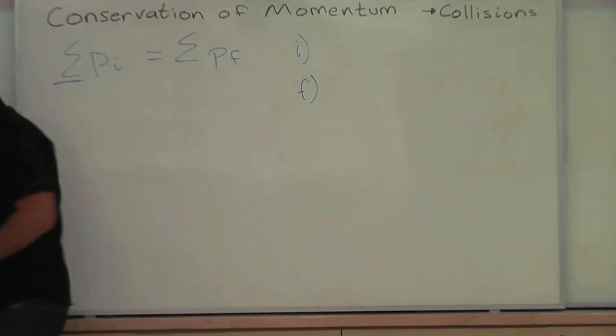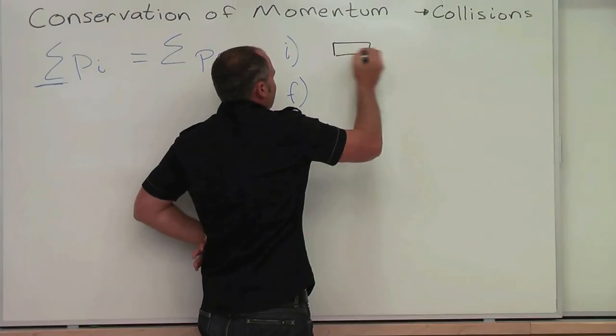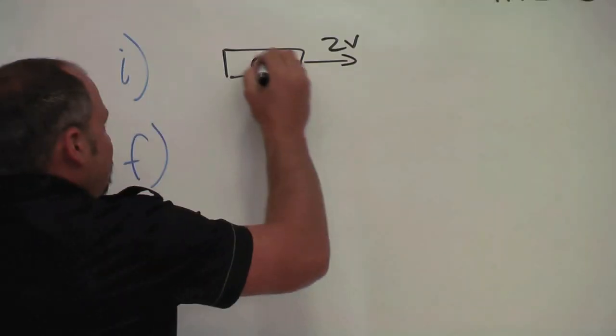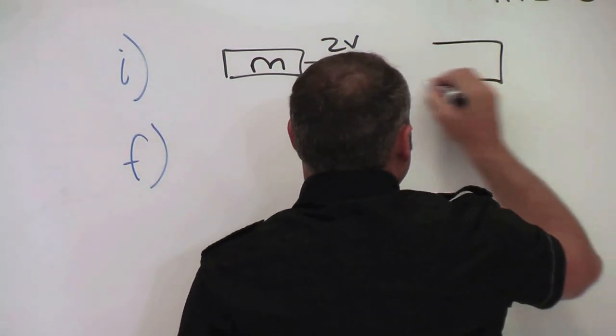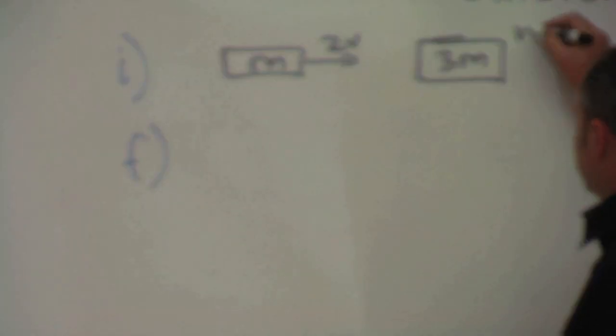So now this guy's coming in and let's call it 2V. He's definitely going faster than what they were going out at. Some mass M and he hits this guy that has three times the mass. Speed is zero initially.